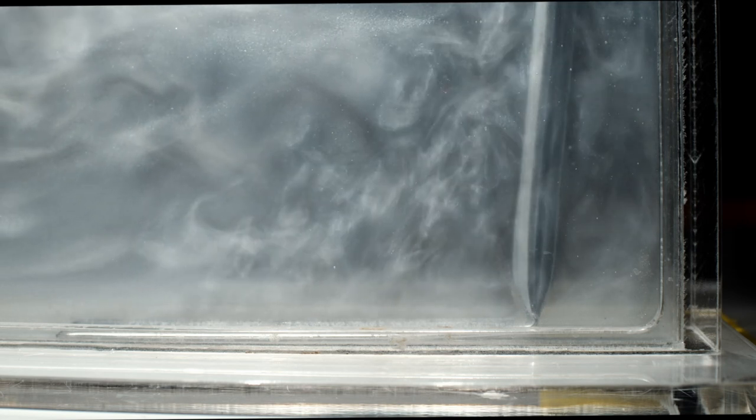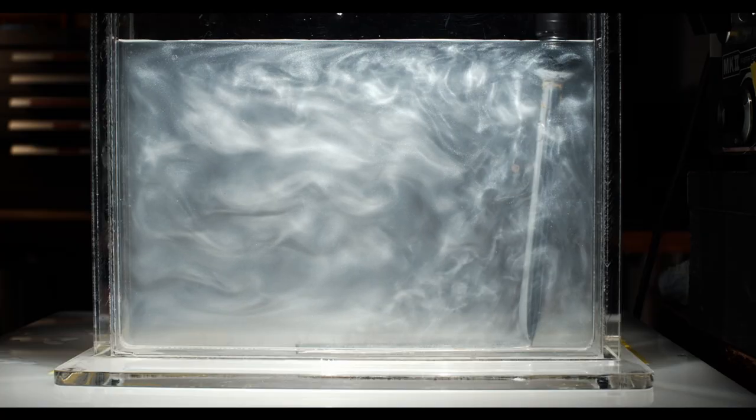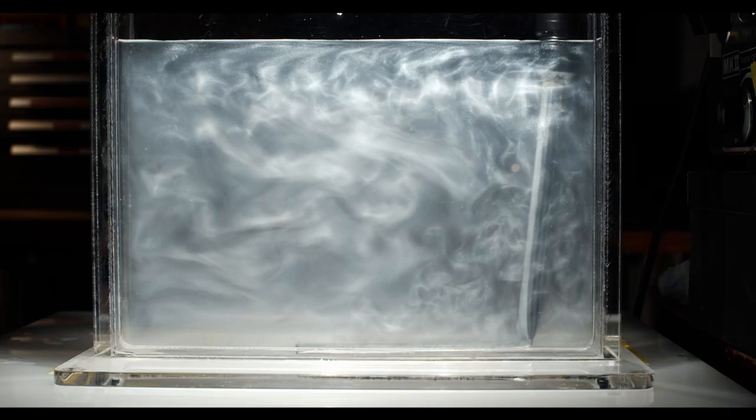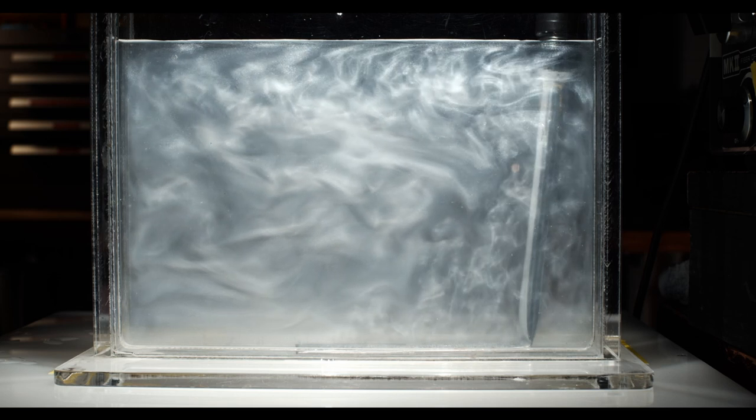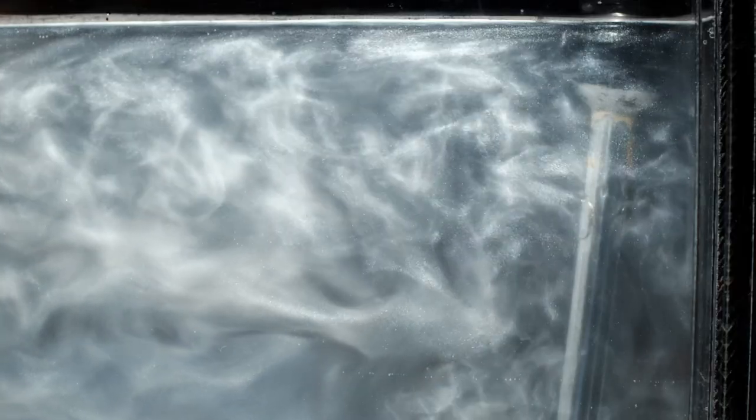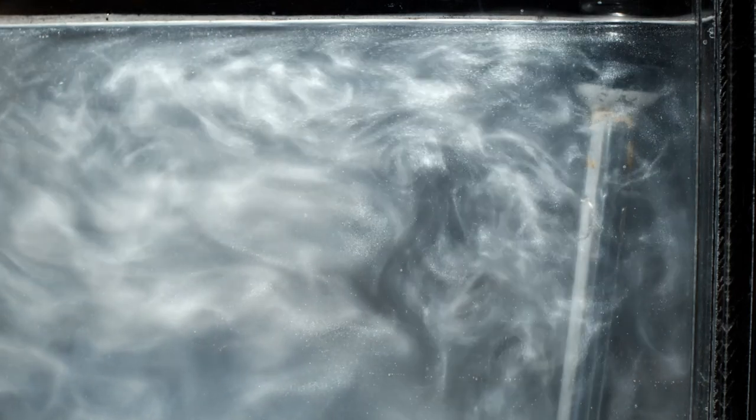These are basically like boundary layer eddies, which we'll talk about in class as well. You can see that the fluid then rises up as the cold fluid comes in and displaces the warm fluid over the heater. Then it reaches the top of the tank and drifts over toward the cold side.